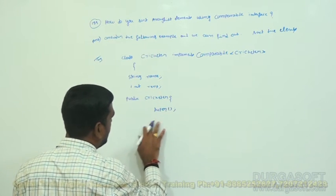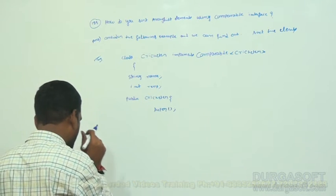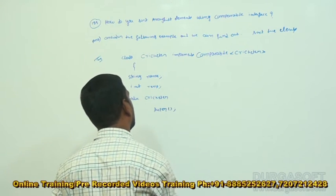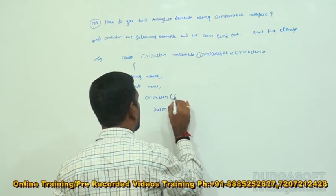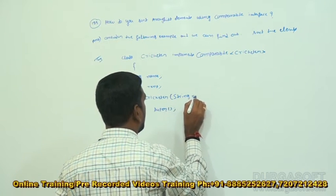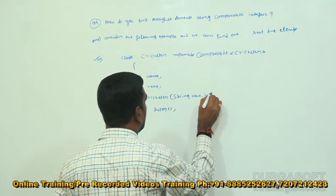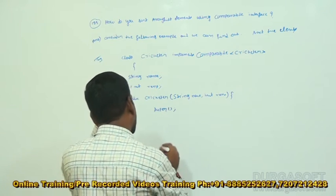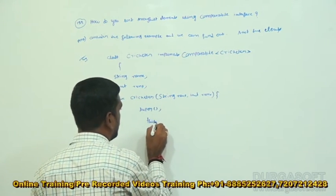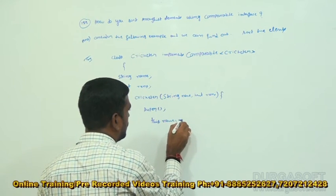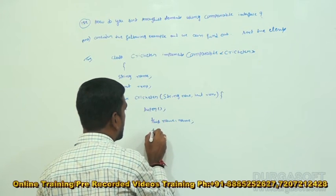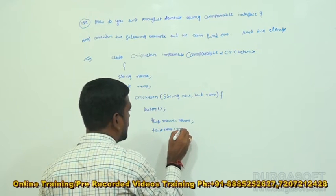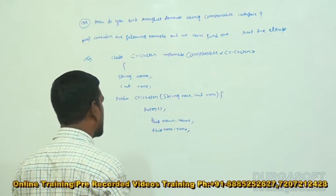Inside this constructor we can take String name, int runs as parameters. Then this.name is equal to name, and this.runs is equal to runs.